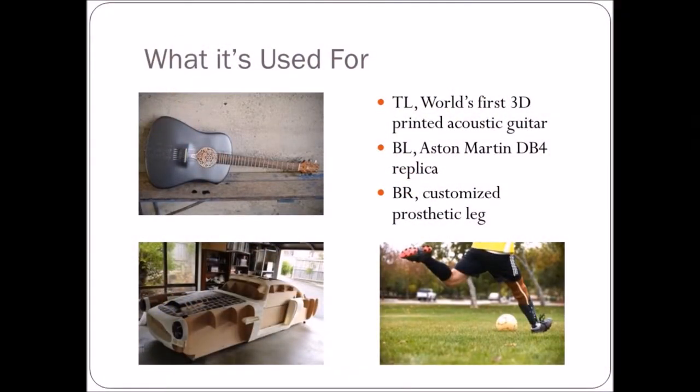Now that you have a better idea about what a 3D printer actually is, we'll go through a few more cool items that have been produced by them. The top left you can see that's the world's first 3D printed acoustic guitar. Below it is the body for an Aston Martin DB4. That car parts are really hard to find, so this guy just said hey, I'll just use a 3D printer to print my own part. And on the bottom right, that's actually a prosthetic leg that has been 3D printed. So in that case, a 3D printer was used to drastically improve someone's quality of life.